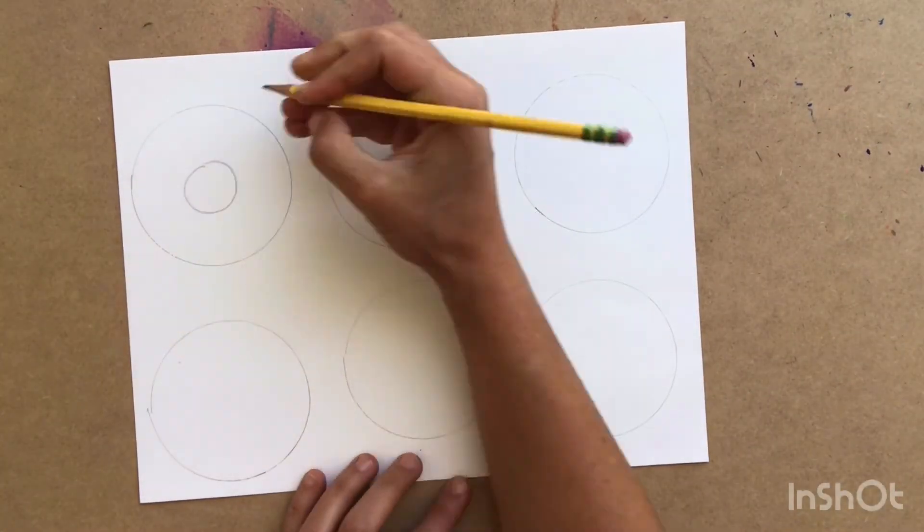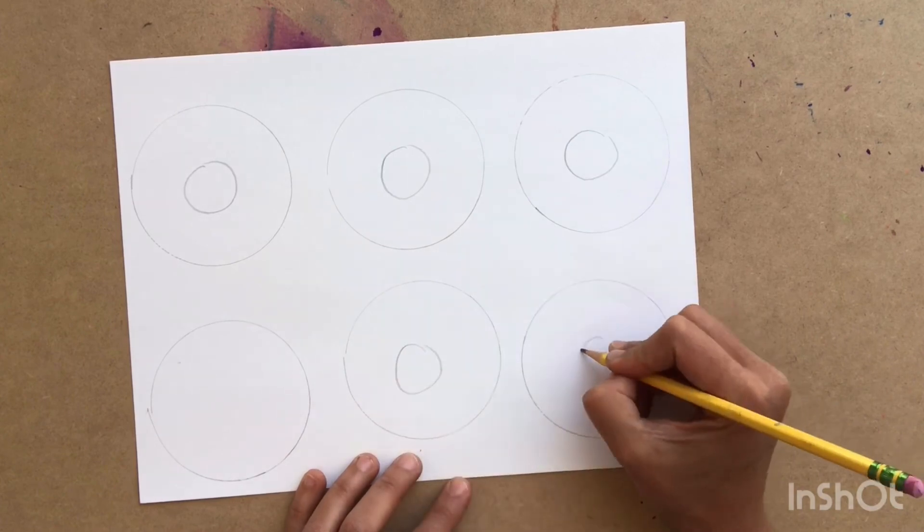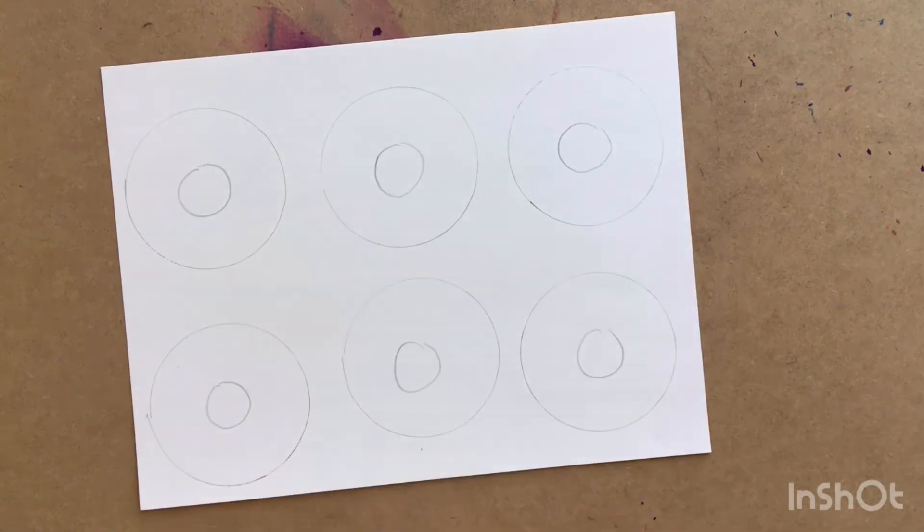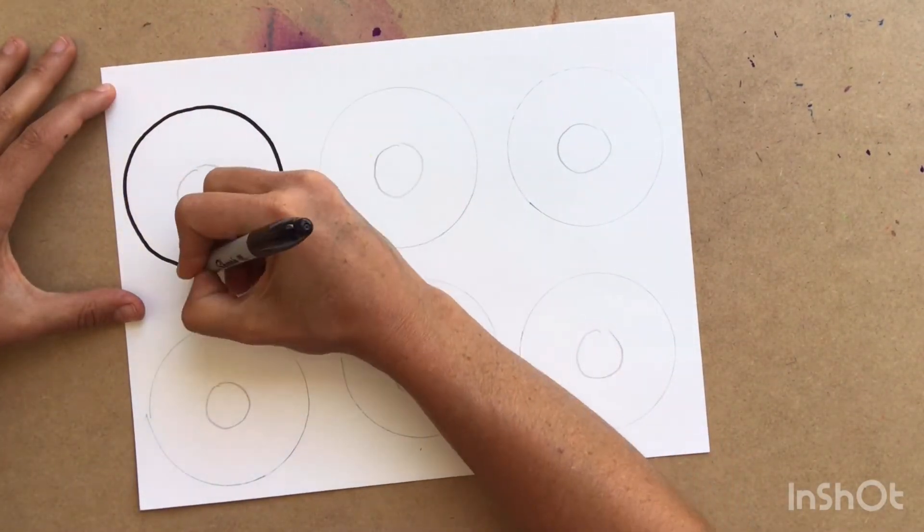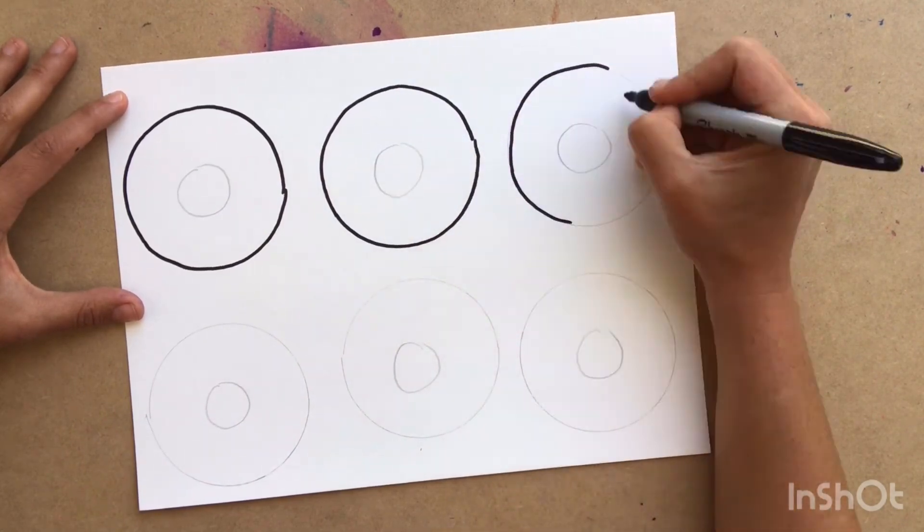Once all your circles are traced, draw a smaller circle in the center for the doughnut holes. Now sharpie all of your pencil marks. Once you have it sharpied, you can erase your pencil marks if you would like.